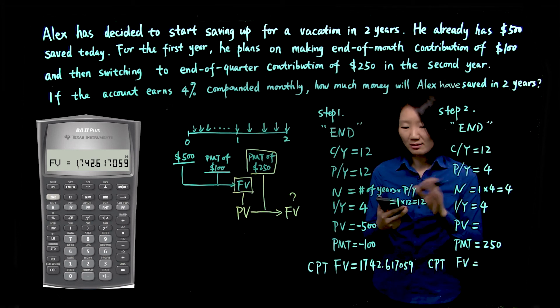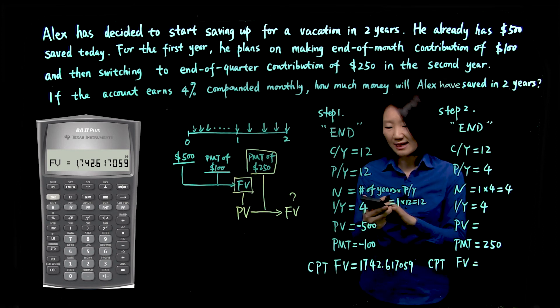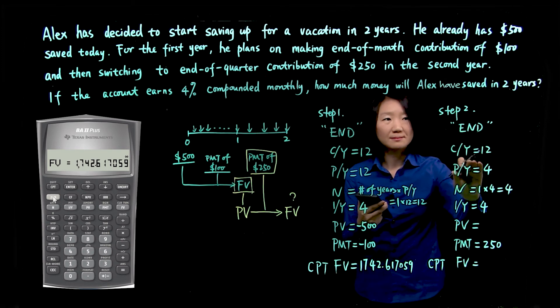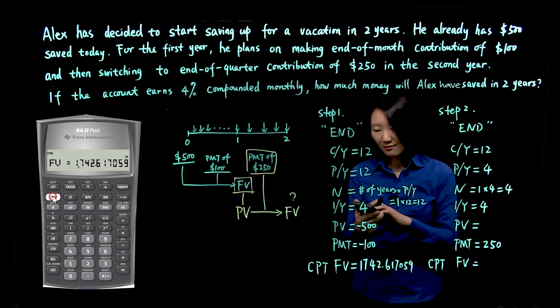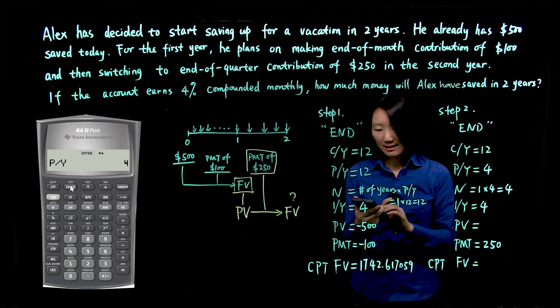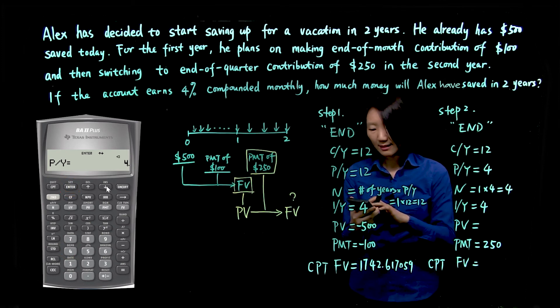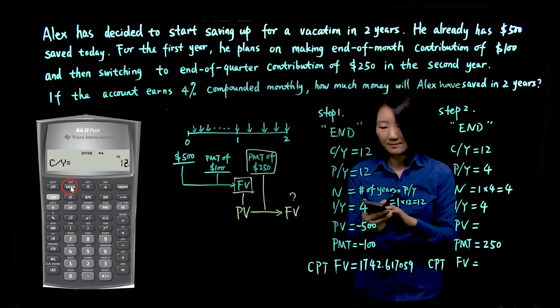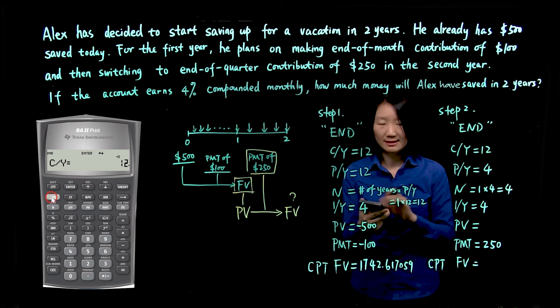Now, step two. We'll enter all the information and calculate again. So the state is end mode. I don't need to change it. CY is 12, so second PY. I'll change PY to 4, enter, scroll down. CY is 12, enter, and then second quit, get out.